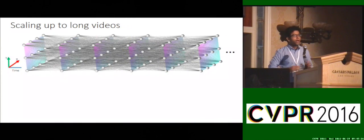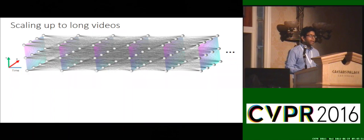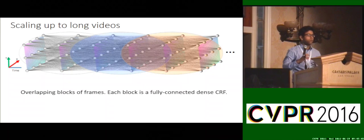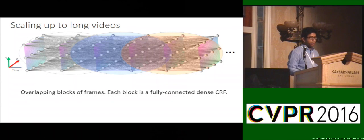Now videos can be arbitrarily long, 10,000 frames, 20,000 frames. It doesn't make sense to have interactions between two images which are very far away. They might be seeing a totally different scene. So what we do is form overlapping sets of frames. Each of these overlapping sets of blocks is a fully connected CRF, but we do inference over them jointly.